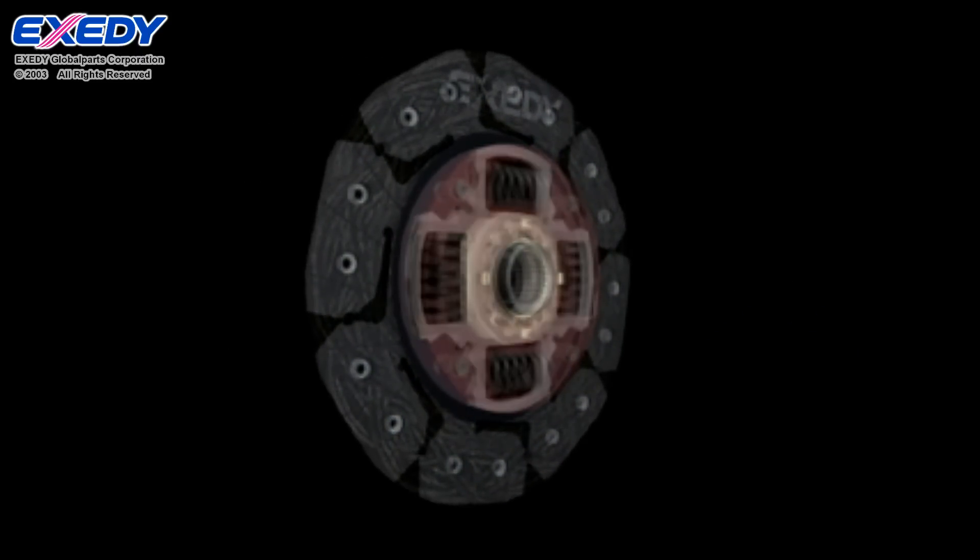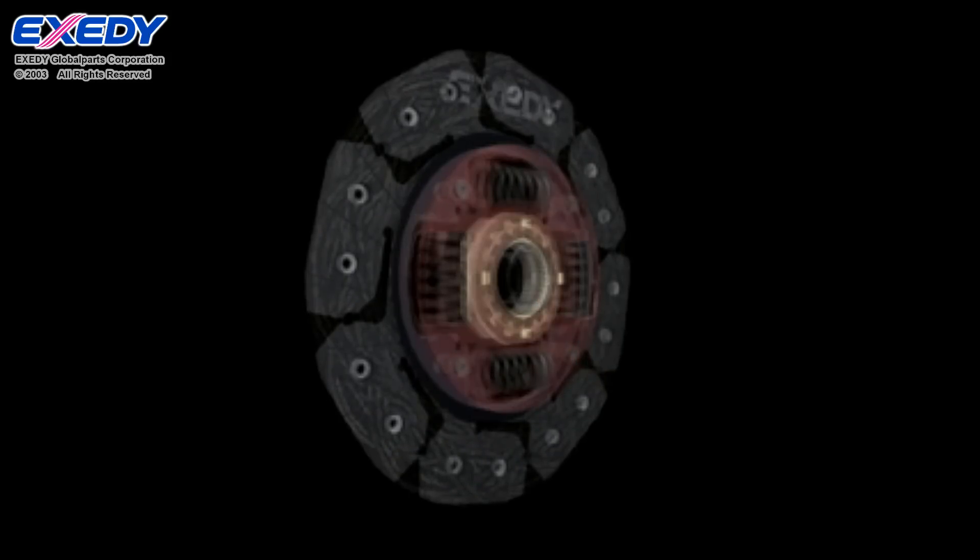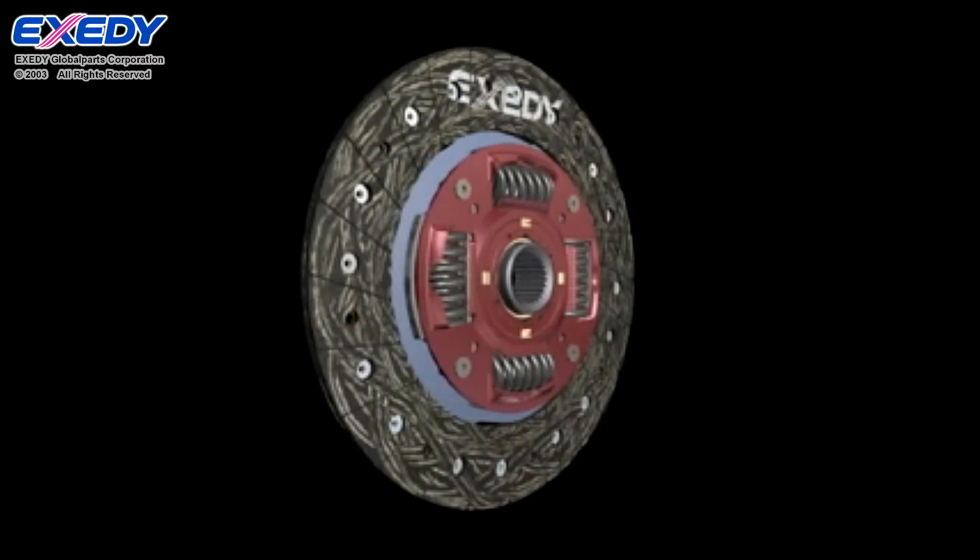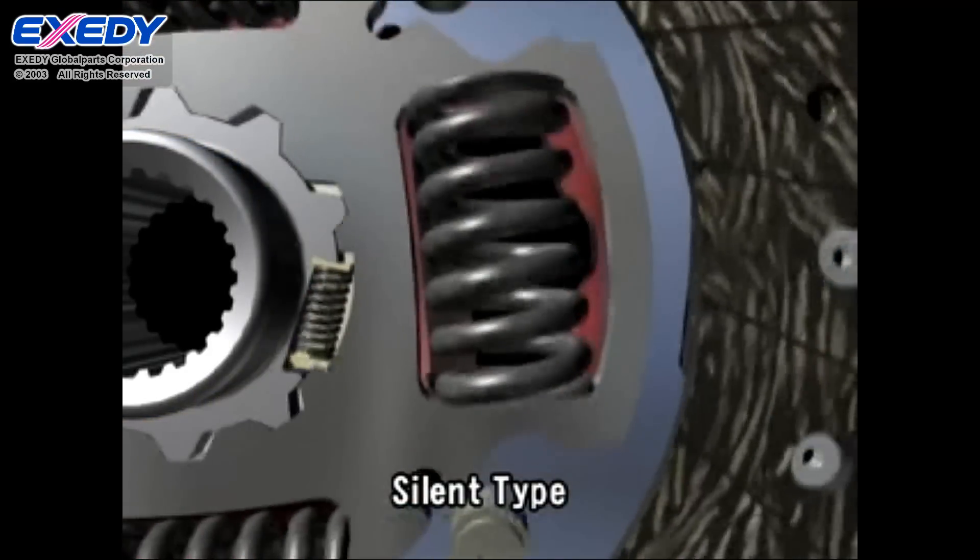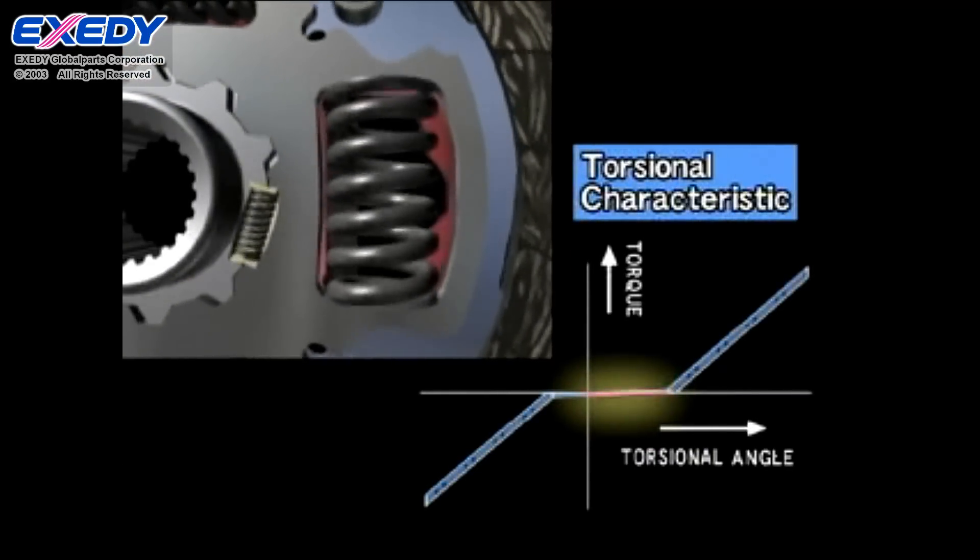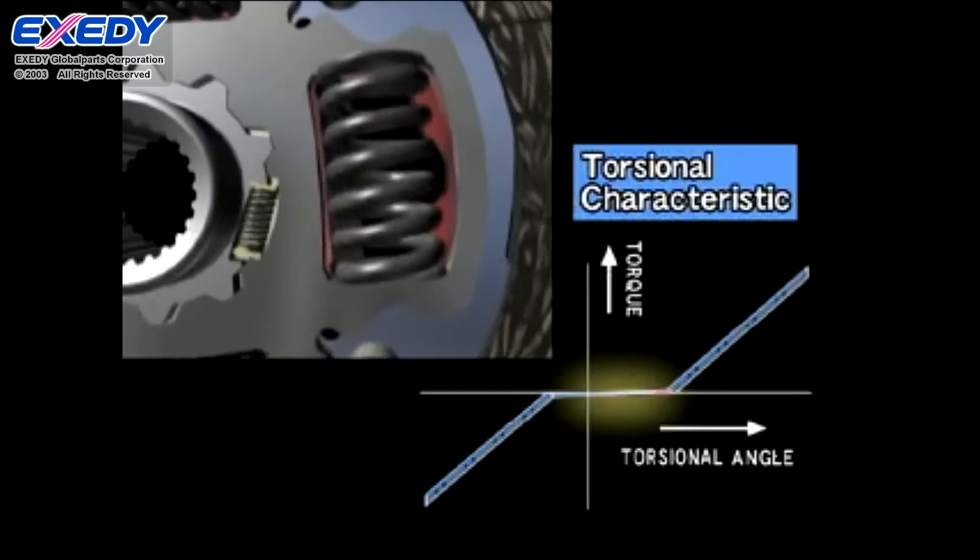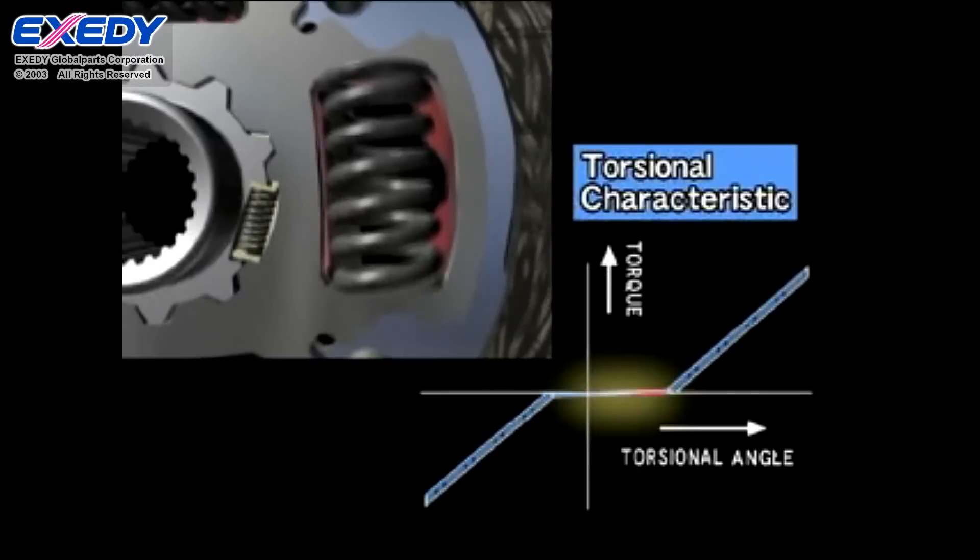Finally, engine torque is transmitted to the transmission via the splined hub. Fluctuations in engine revolution while idling are absorbed by this two-piece splined hub, which is coupled with several small dampening springs. It functions to prevent chattering noise when fluctuations are transmitted to the transmission.